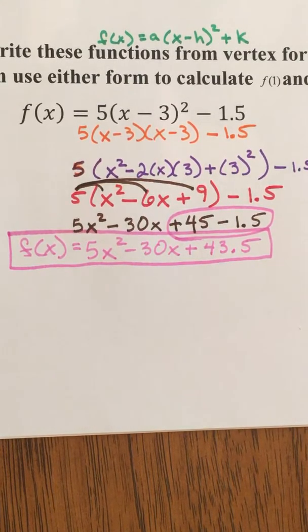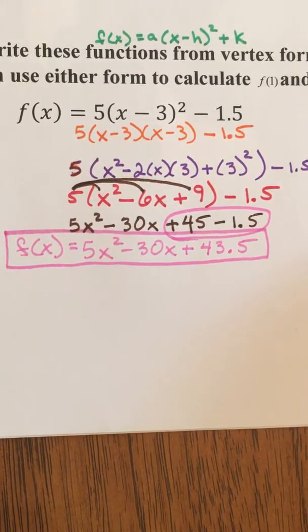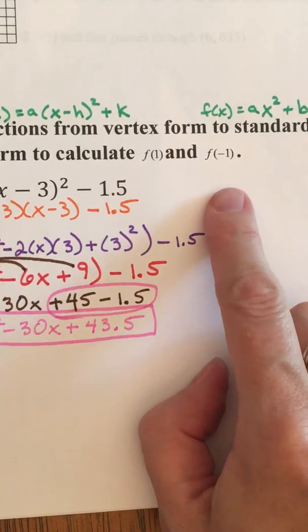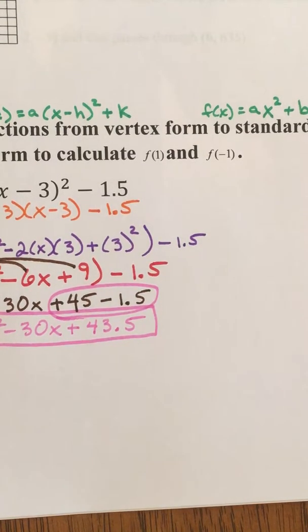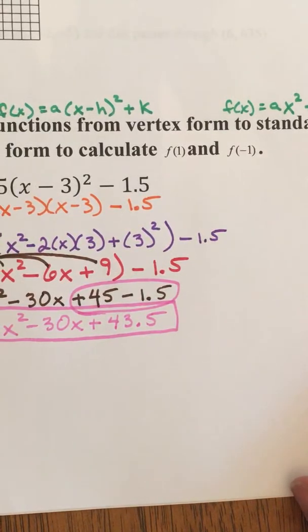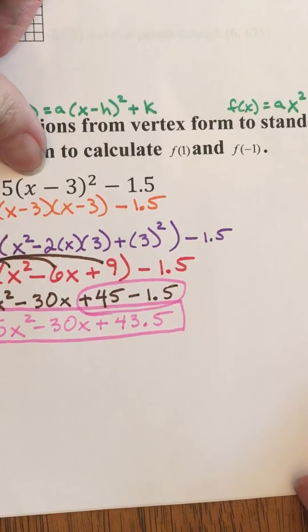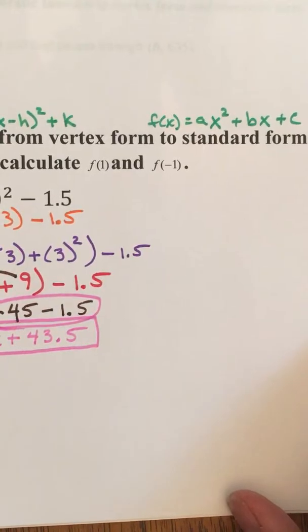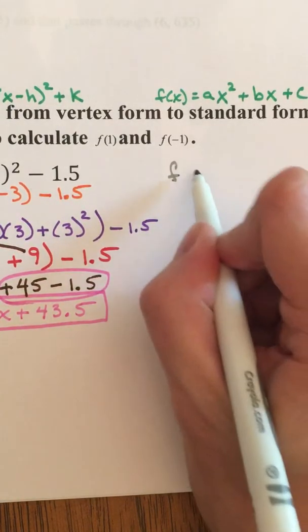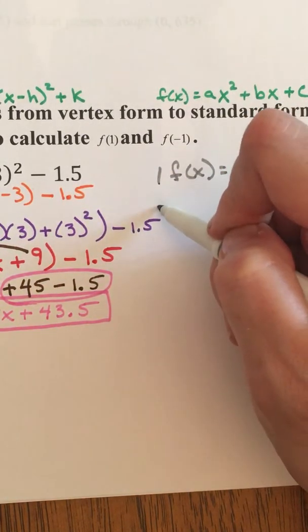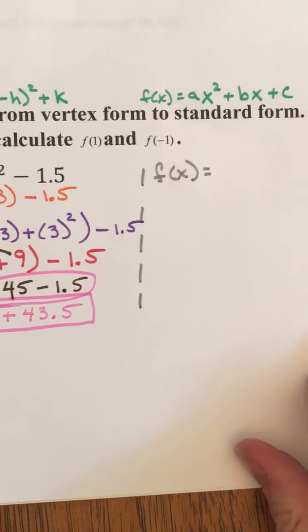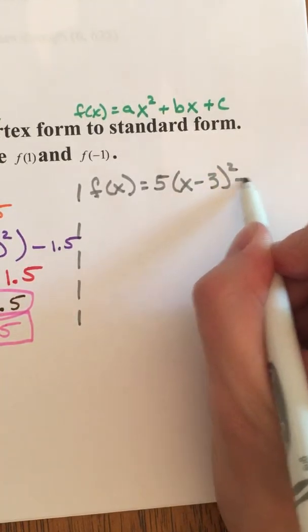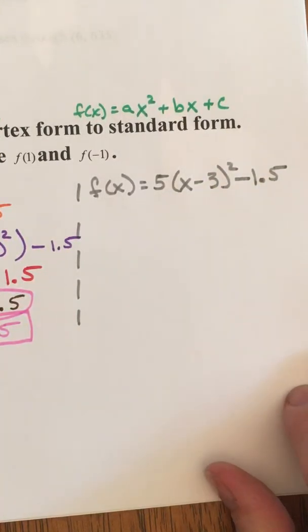Now unfortunately we have not finished the problem because it said to either in either form calculate the value the value of f of 1 and the value of f of negative 1 so let's do that. We can use that we can do that very easily in the vertex form I think that's the fastest easiest way to do it. Let's do it over here. f of x we were told in the beginning when they handed us the problem it's 5 times x minus 3 squared minus 1.5 all right.